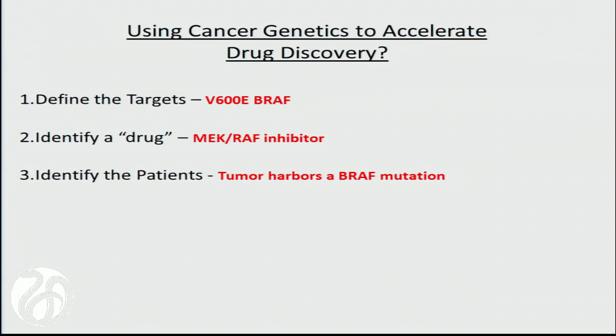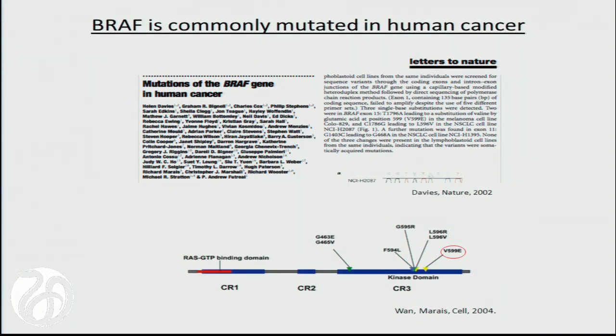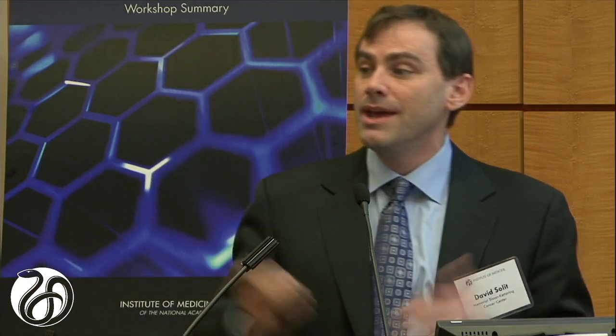The story, at least for me, began when this paper was published in 2002 in Nature by the Sanger Group, showing that BRAF was mutated in human tumors. I had been working on a different target, but I looked at this paper and said this would work if we had the right drug. The target was found mutated in about 8% of all cancers. The mutations really clustered within the kinase domain, and they were activating kinase domain mutations found in a non-overlapping pattern with other oncogenic alterations, which suggested they were driver alterations.